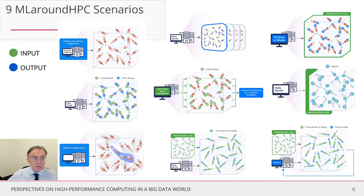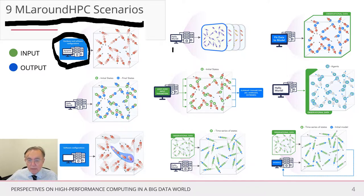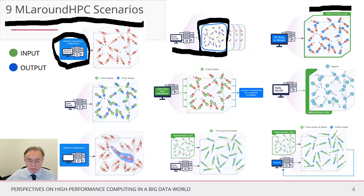Here are the nine ML around HPC scenarios. The pictures are too small to discuss in detail, but in these diagrams, green is some input and blue is some output. One scenario where all the hardware and software is blue represents ML auto-tuning for configuration. Another shows multiple simulations where we use smart machine learning for data sampling and smart ensembles. Another shows fitting data to a model, where initial values are given by machine learning.